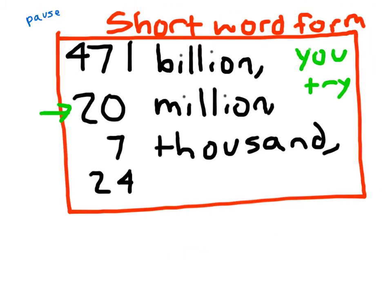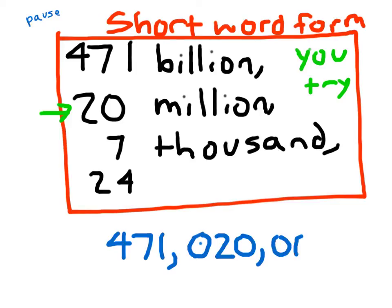So writing out those numbers, four hundred seventy-one billion, you write four seven one first. To write twenty million, how did you write twenty million? Remember you had to put three digits in there. Hopefully you put a zero as your placeholder, and then a zero two zero. Take a look at the rest of your problem if you need to. For seven thousand, you put zero zero seven. And for twenty-four, again we have a zero as a placeholder, and we put two four.